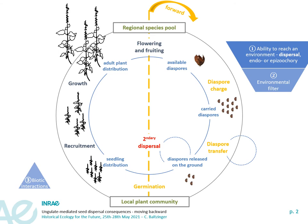If we are interested in seed dispersal mediated by ungulates, we can use a forward approach focusing on each phase of the dispersal cycle — emigration, diaspore charge, the transfer, and then immigration or germination where the seed is established. Or we can use a backward approach, which is the one we are going to look at in this presentation: examining adult plant distribution patterns to understand what determines a specific distribution pattern, by looking at the distribution of mother plants some years ago.